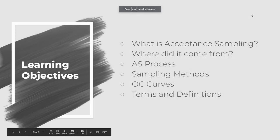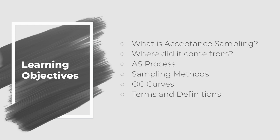Over the course of this lecture we will be discussing what acceptance sampling is, where it originated from, and we'll even go into a deep dive into the specifics as to how it works. In this way we will discuss different sampling plans, the hows, whens, and whys associated with their use. We will also break down these processes and go through how to build an operating characteristic, also known as OC curves. And we will go through an overview of useful terms and definitions that will help tie everything together. Now this may seem like a lot, but it's actually quite simple.